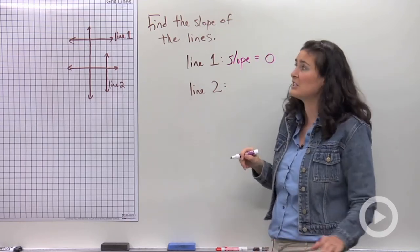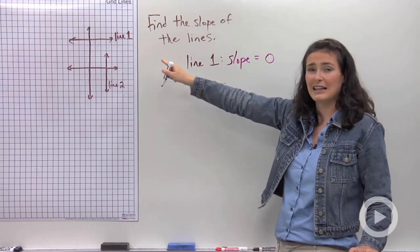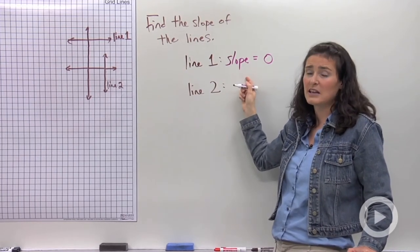By the way, that's true for every single horizontal line. Any line that's flat like that, the slope will always be zero.